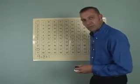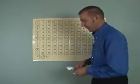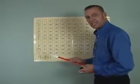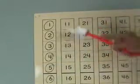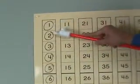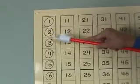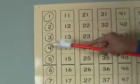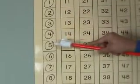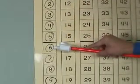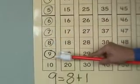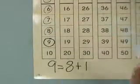Boys and girls, can you say the number with me? Nine equals eight plus one. Let's count together, shall we? Let's begin at the top. One, two, three, four, five, six, seven, eight, nine.